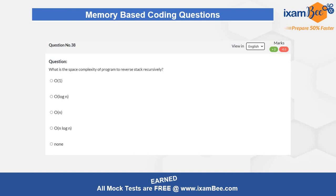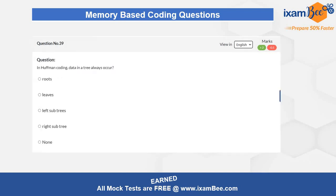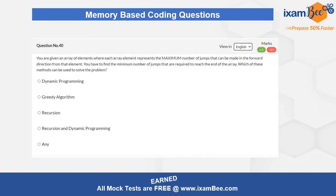Question eight is related to the space complexity of a program where you need to reverse a stack using a recursive method approach, and you have to choose the correct answer from five options. Question nine is related to Huffman coding in a tree, asking where the data always occurs in the tree and choosing the correct location. Question ten presents a situation and asks which method can be used to solve the problem — dynamic programming, greedy, recursion, or a combination of recursion and dynamic programming.